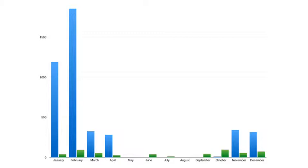Rockhampton is in Australia, one side of the Pacific Ocean, while LAX, or Los Angeles, is in the USA on the other side of the Pacific Ocean. This graph represents precipitation in millimeters.